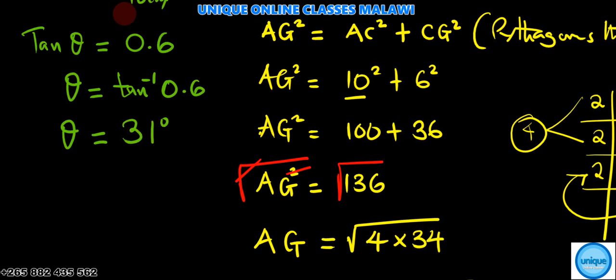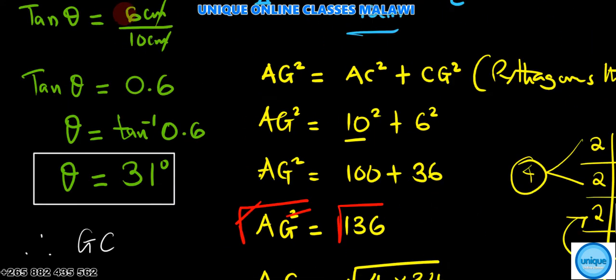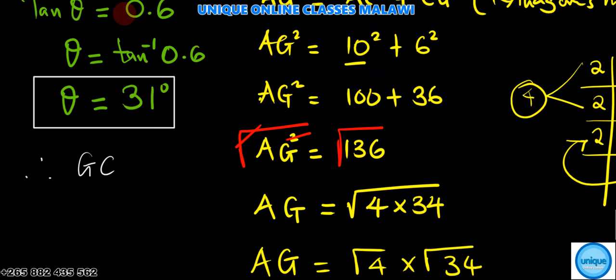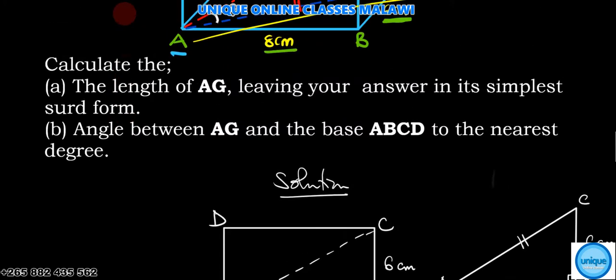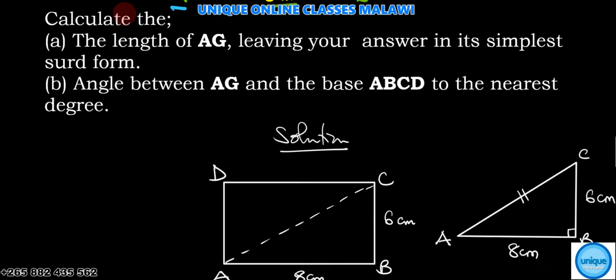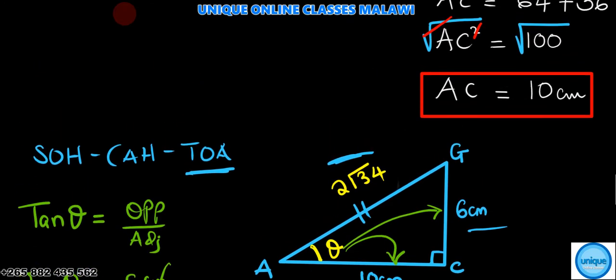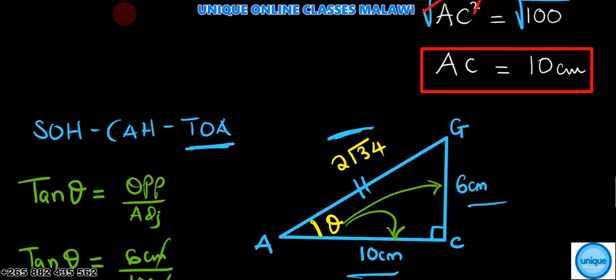So we have 31 degrees. You can also use sine or cosine, though it's more involving because you have to rationalize the denominator. Let me choose sine.